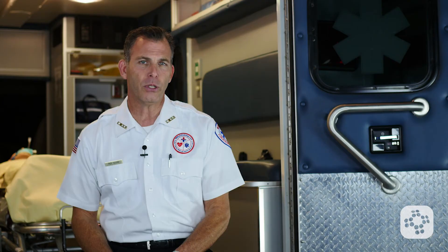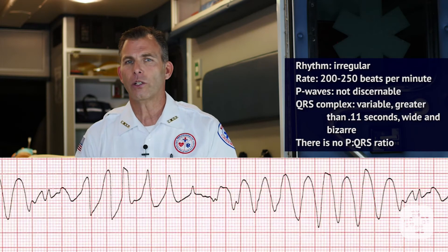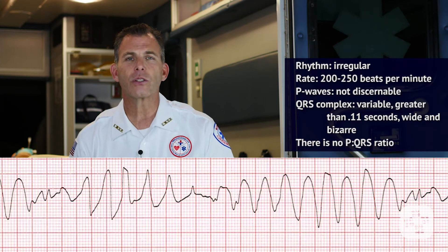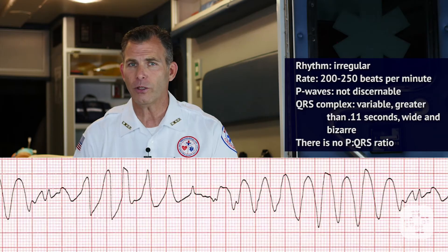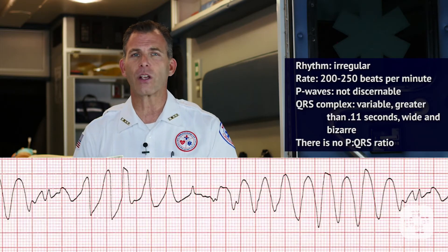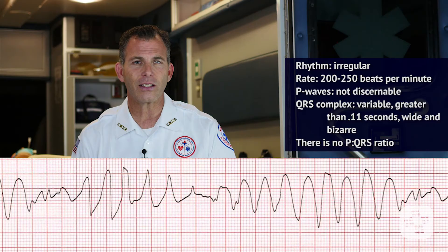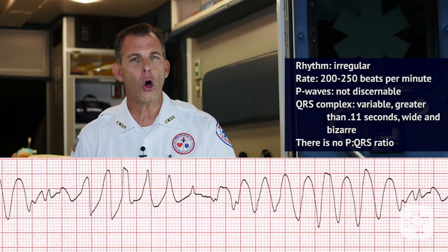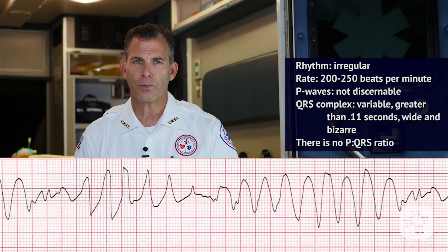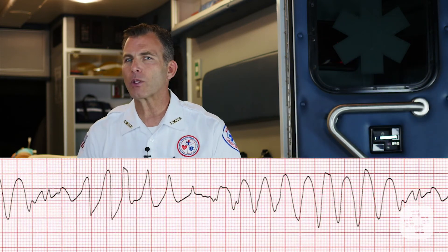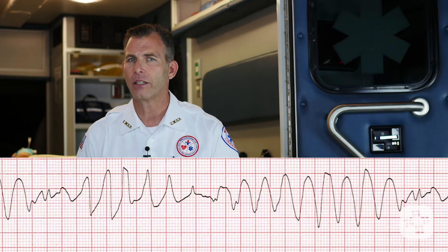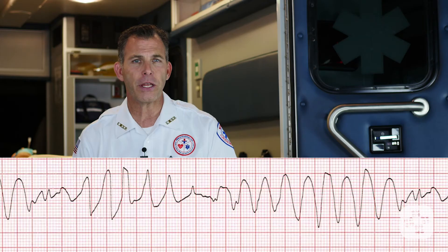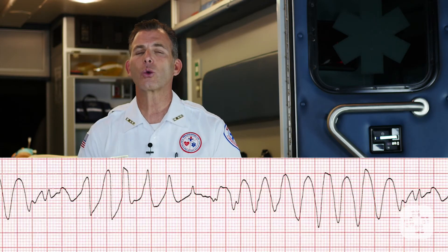On ECG, polymorphic wide complex tachycardia shows an irregular rhythm with a rate between 200 to 250 beats per minute. There are no discernible P waves and no P-to-R interval. QRS complexes are variable but greater than .11 seconds — wide and bizarre — with no P wave to QRS ratio. In torsades, it can sometimes appear that the apex of the V wave changes from top to bottom and back again. Torsades des pointes, or TDP, translates as 'twisting of points.'